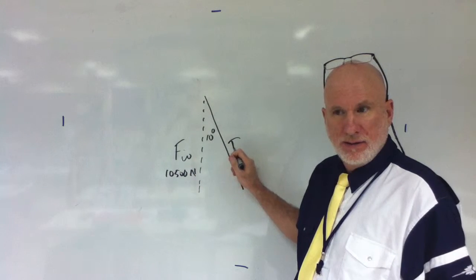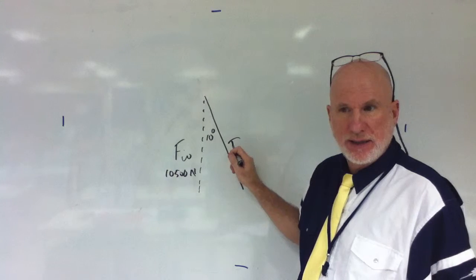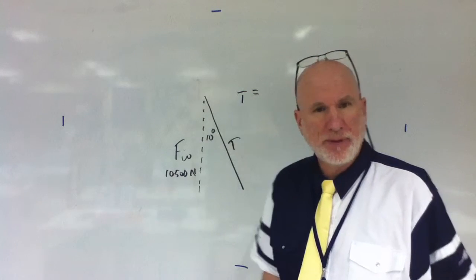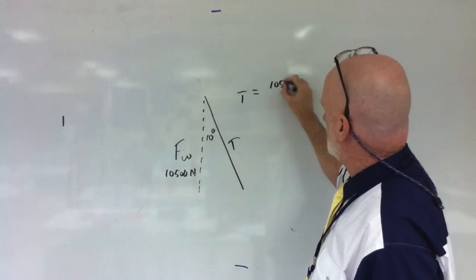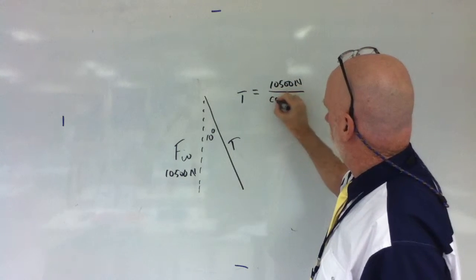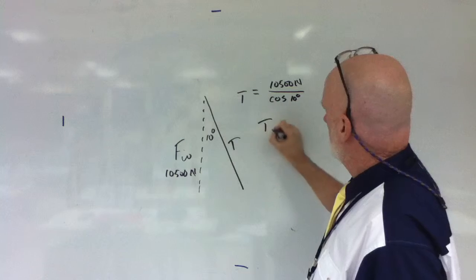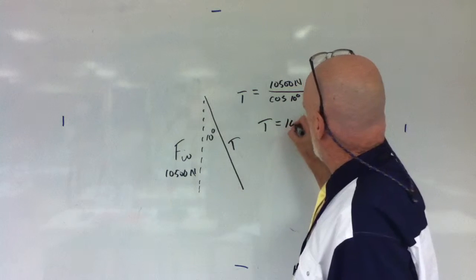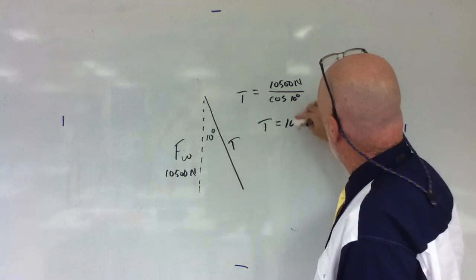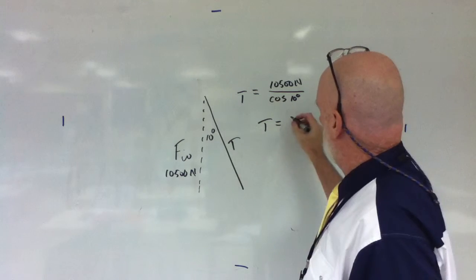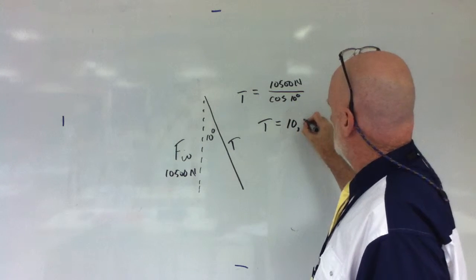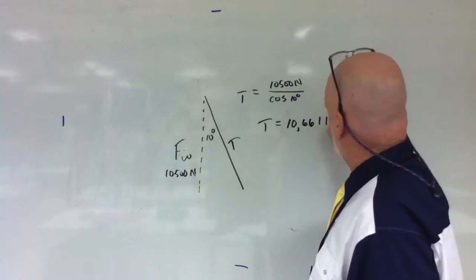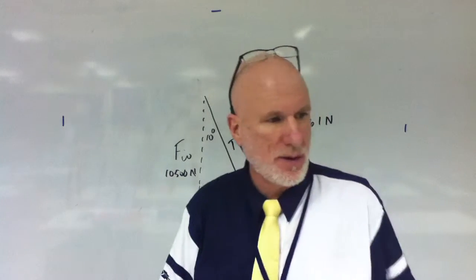the hypotenuse, or in this case, the tension. So the tension is going to be equal to 10,500 Newtons over cosine 10 degrees. The tension equals... Amir, what did you get? 10,661.98. That's fine, close enough.